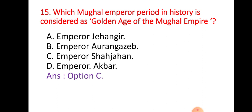Question 15: Which Mughal emperor's period in history is considered the Golden Age of the Mughal Empire? Option A: Emperor Jahangir; Option B: Emperor Aurangzeb; Option C: Emperor Shahjahan; Option D: Emperor Akbar. The right answer is Emperor Shahjahan — his period is known as the Golden Age of the Mughal Empire.